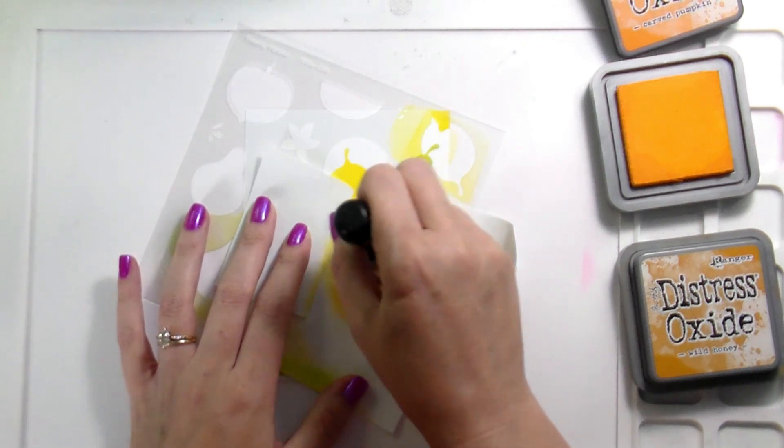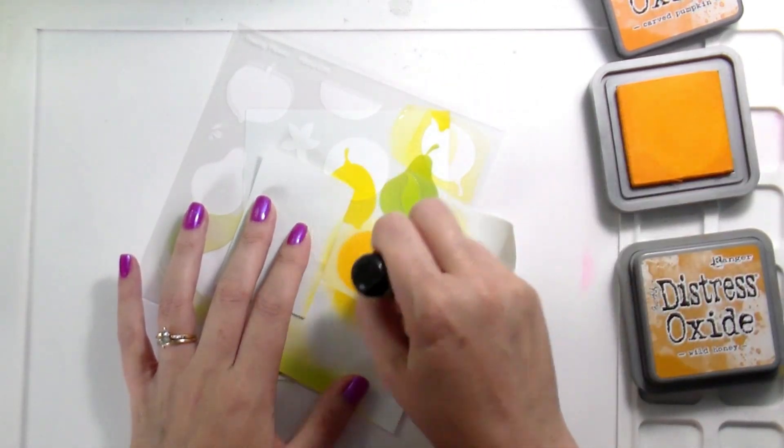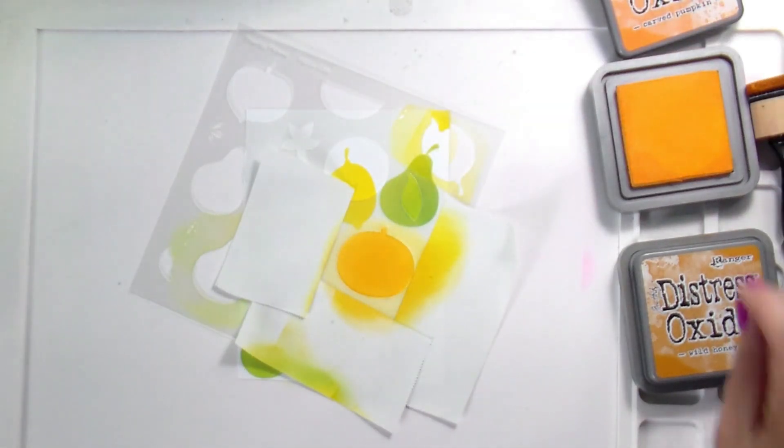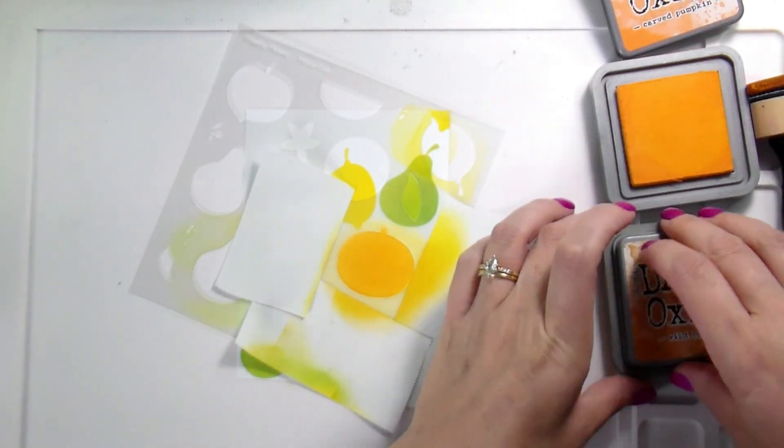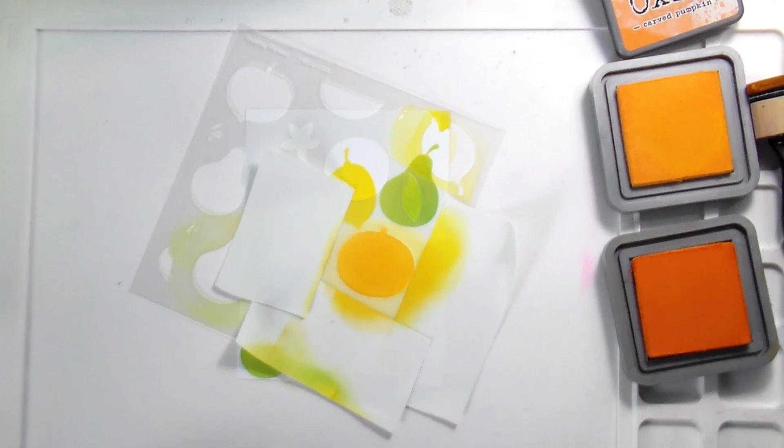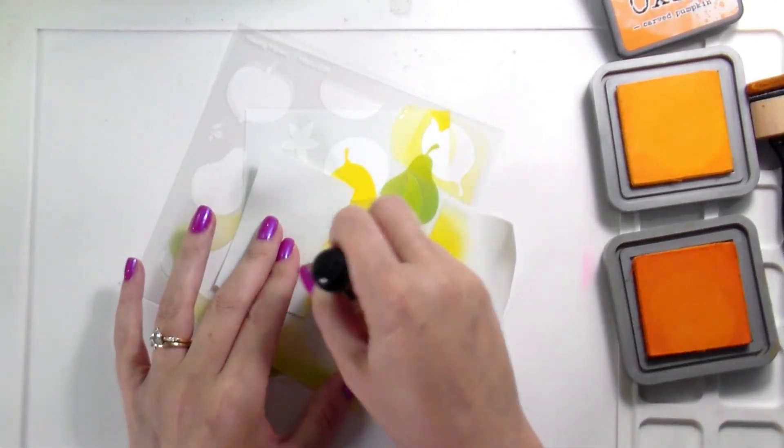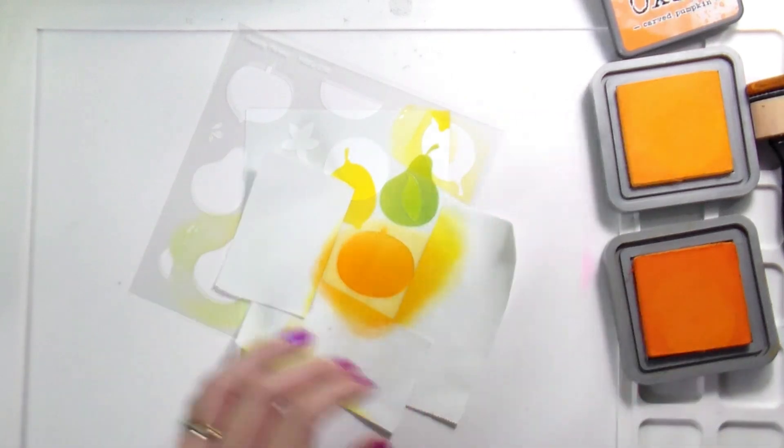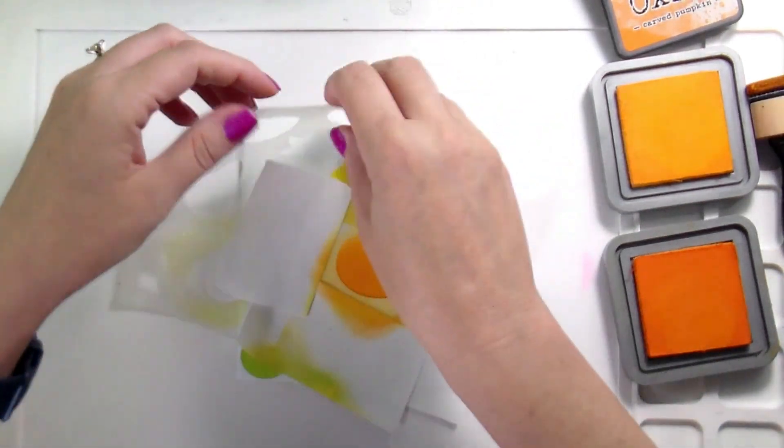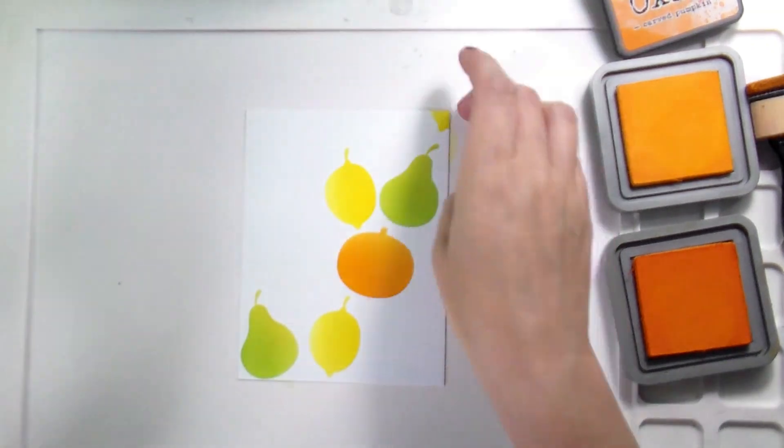Second reason I chose them is because for the stamping portion of this background, Distress Oxides stamp beautifully because of those pigment properties. Distress Inks, not so much. If you wanted a little bit of a bolder background, you could do your inking with Distress Inks and then do your stamping with Oxides. That would also be a combination that would work really well.